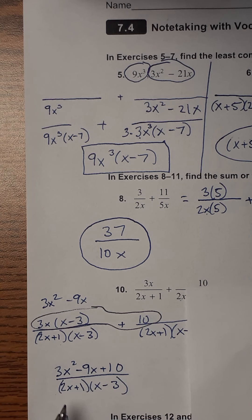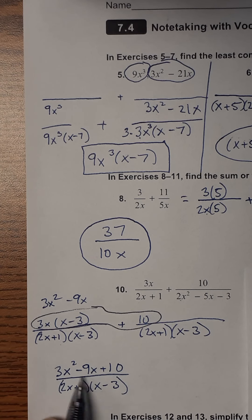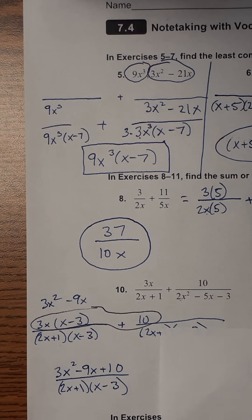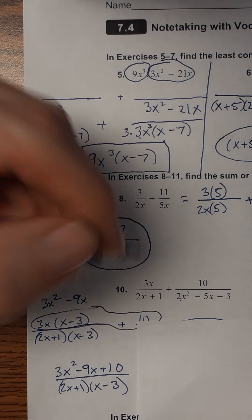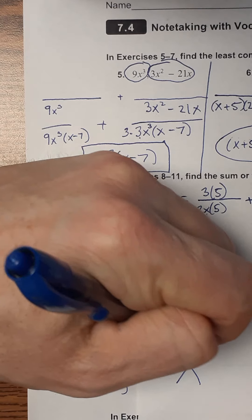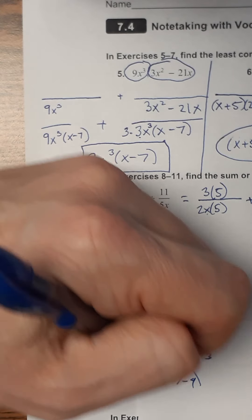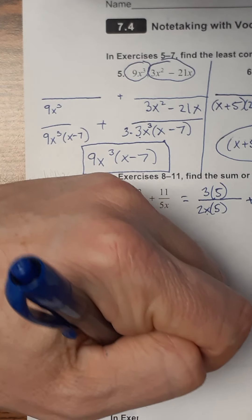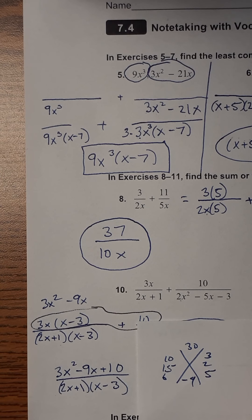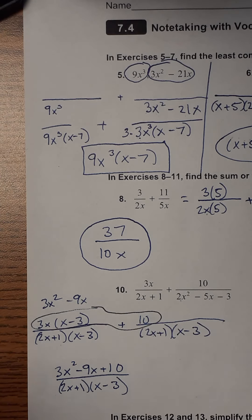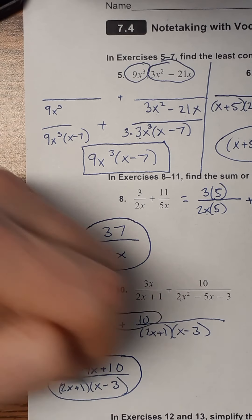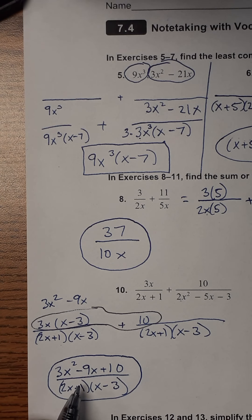To make sure we're done, I need to check if 3x squared minus 9x plus 10 factors further so anything might cancel with the denominator. Using the x-box: multiply 3 and 10 to get 30, looking for numbers that add to negative 9. Trying 10 and 3 — no. 15 and 2 — no. 6 and 5 — no. There are no other factor pairs of 30 that work, so the numerator doesn't factor. We're done — the answer is (3x squared minus 9x plus 10) over (2x plus 1)(x minus 3).